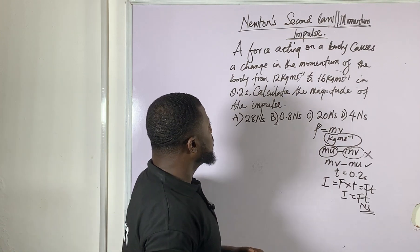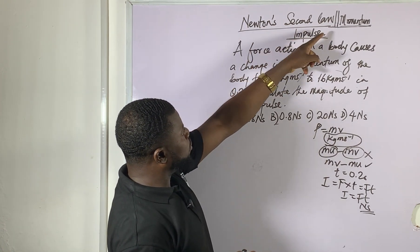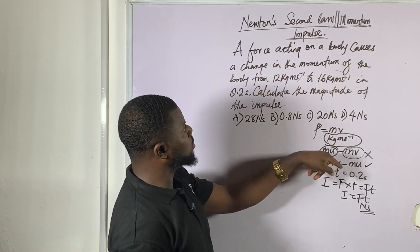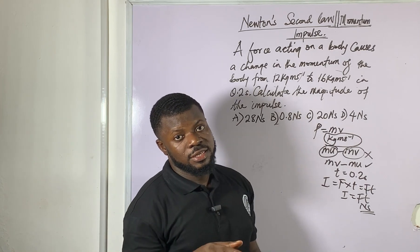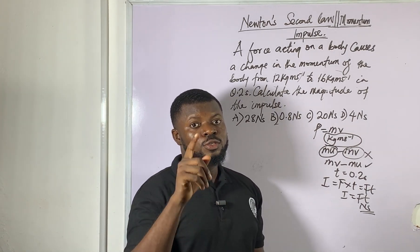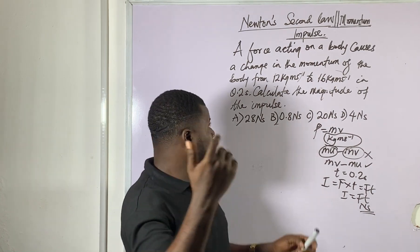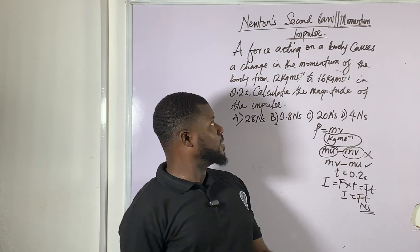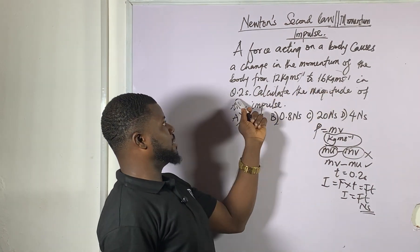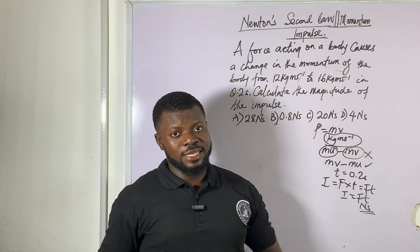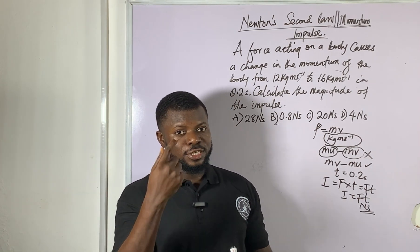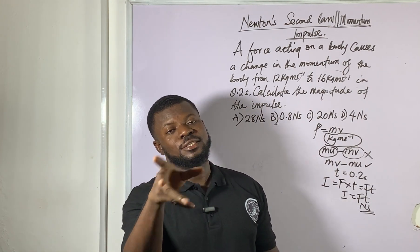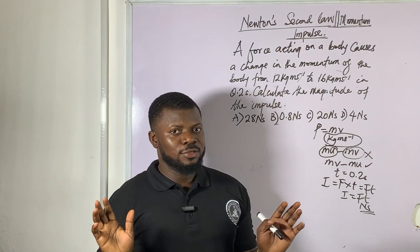I hope we can solve the equation. If you check the topic, you can see it says Newton's second law. You can see momentum, you see impulse. And because they mention momentum and impulse, they want you to bring in Newton's second law. The law states that the rate of change of momentum is directly proportional to the force acting on the body. You can see the question — a force acting on the body causes a change in momentum from one value to another in time.